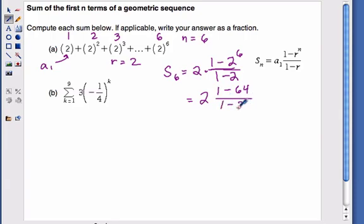And so I get two times the quantity of one minus two raised to the sixth power is 64. And then I'm going to go ahead and do one minus 64 and one minus two next. And so this gives me two times one minus 64 is a negative 63, and one minus two is a negative one. And so a negative divided by a negative will give me a positive. So I have 63 times two, which is 126. So this is my answer for part a.